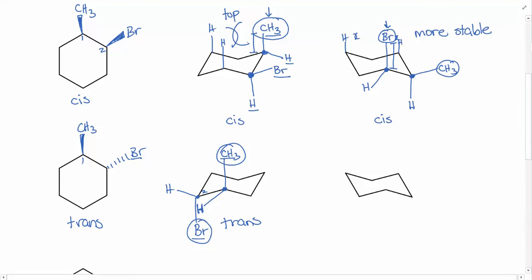Now we can draw the ring flip. Picking a down-pointing carbon as number one, the position closer to the top of the ring is now equatorial, so the CH3 moves from axial to equatorial. Carbon two then puts Br in the equatorial position as well. Because both substituents are in the equatorial position in this second representation, it is the more stable chair conformation.